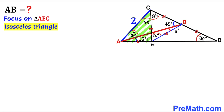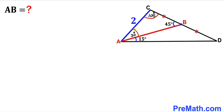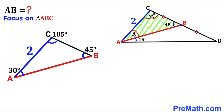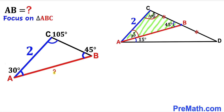Furthermore, angle ACB — this whole angle — is going to be 45 degrees plus 60 degrees, which is going to be 105 degrees. So therefore in triangle ABC this angle is 30 degrees and this angle turns out to be 105 degrees. Copying triangle ABC: angle ABC is 45 degrees, angle BAC is 30 degrees, angle ACB is 105 degrees, and side length AC is 2 units. Now we are going to calculate side length AB.